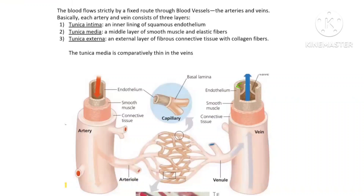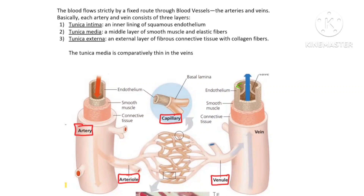Hello students, welcome back to the channel. In this video we are going to study about blood vessels and what are the walls which make the blood vessels. There are five major blood vessels. First is the artery, which you can see in the diagram, and it divides to form arterioles. Arterioles divide to form capillaries, and capillaries unite to form venules, and venules unite to form one large vein.